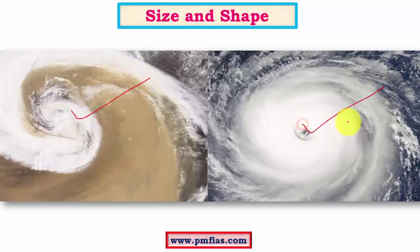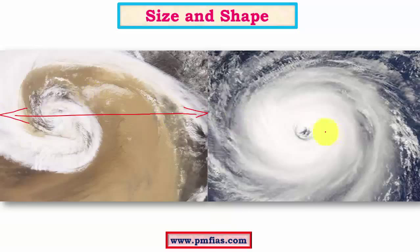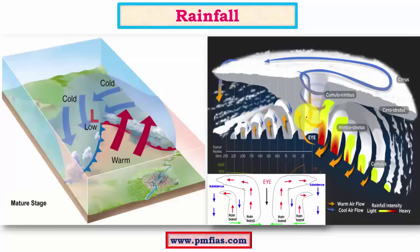Coming to size and shape, temperate cyclones have a very irregular shape, while tropical cyclones have a highly elliptical shape. In terms of size, tropical cyclones are considerably smaller — typically 300 to 500 kilometers in diameter, reaching up to 800 kilometers only in very strong super cyclonic storms. Temperate cyclones are much larger, ranging from 500 to 2000 kilometers in horizontal extent.